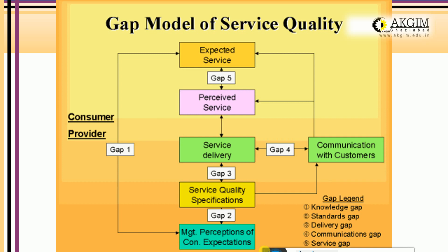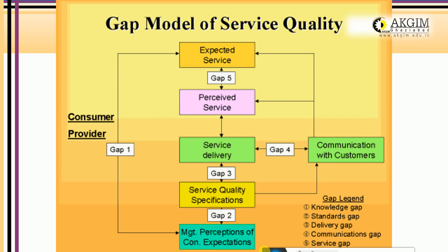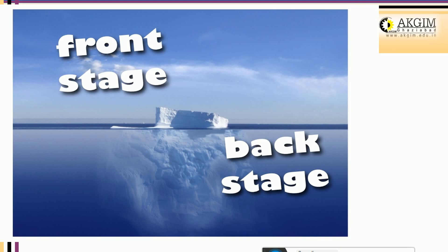Before moving further, let's understand the Gap Model for service quality. There are five gaps — some are consumer-oriented gaps and some are company or service-provider-oriented gaps. Gap number one is known as the Knowledge Gap.